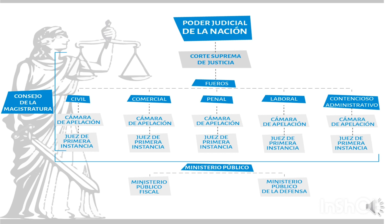The judicial power in Argentina — the Poder Judicial — includes the Corte Suprema de Justicia and the Consejo de la Magistratura. The Consejo de la Magistratura is a body in charge of choosing judges, and then we have the different fueros: civil, comercial, penal, laboral, contencioso, administrativo. This is the judicial power in Argentina at the national sphere.